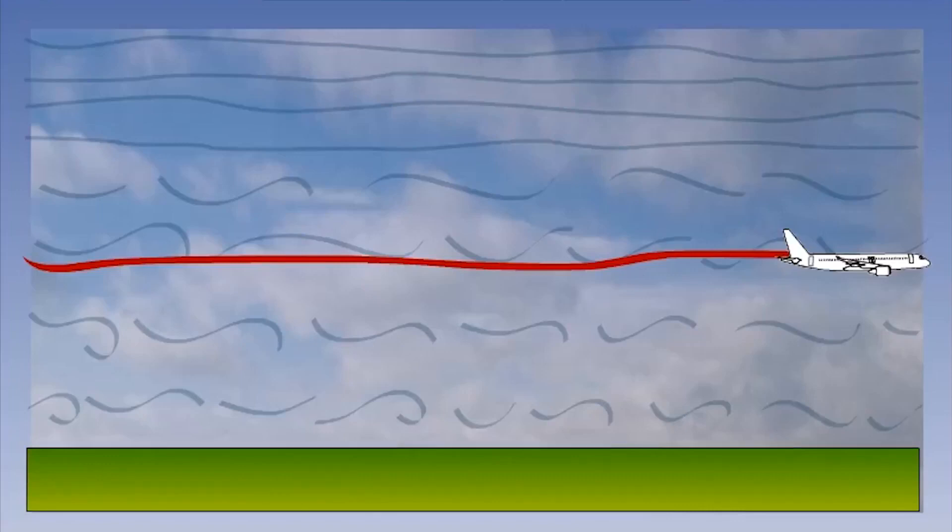To simplify this statement, we can say that turbulence does disturb the aircraft's attitude but the aircraft can still maintain its flight path.